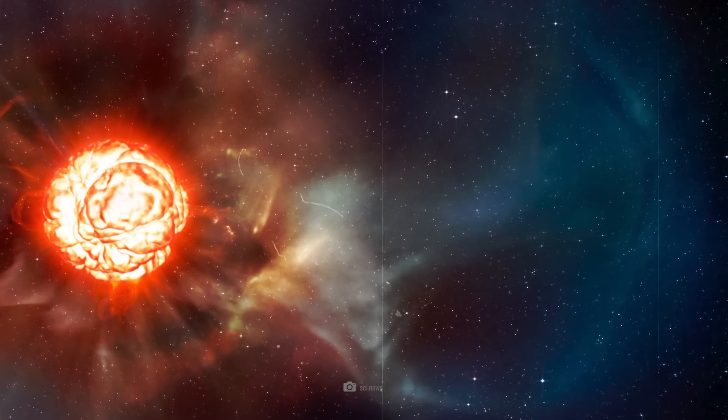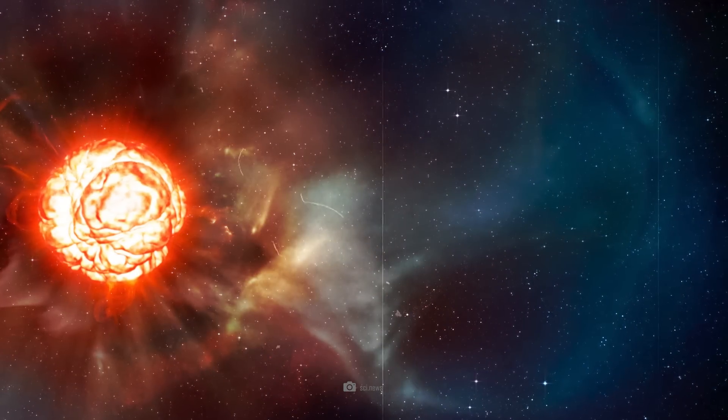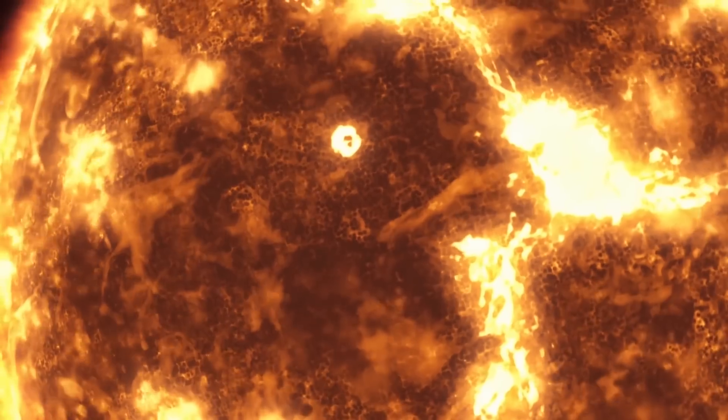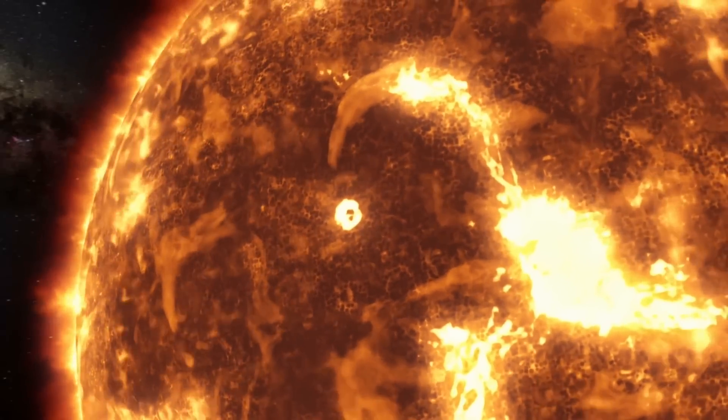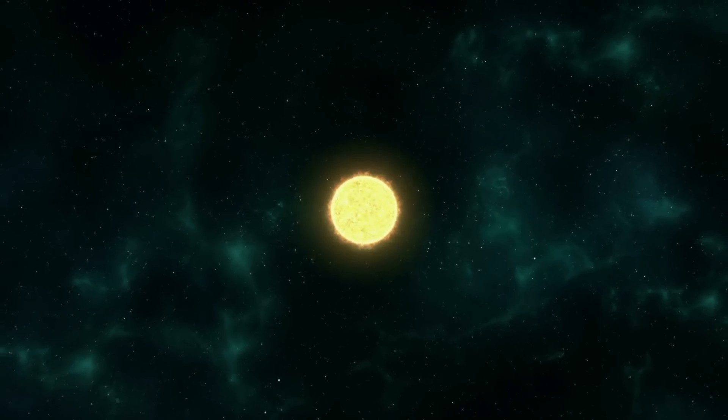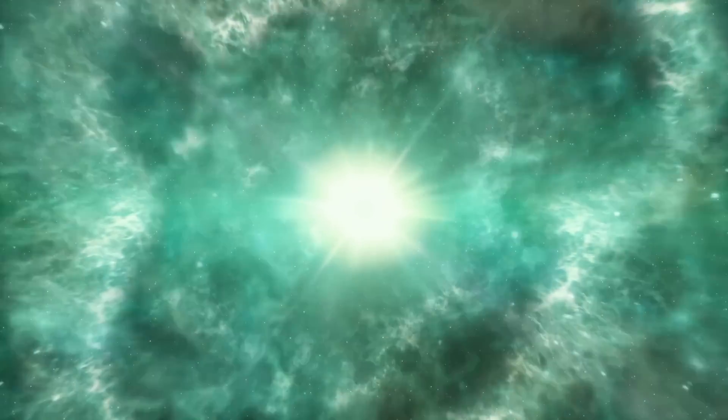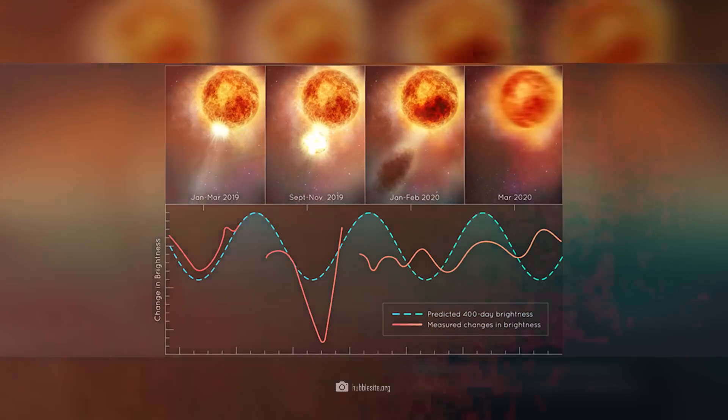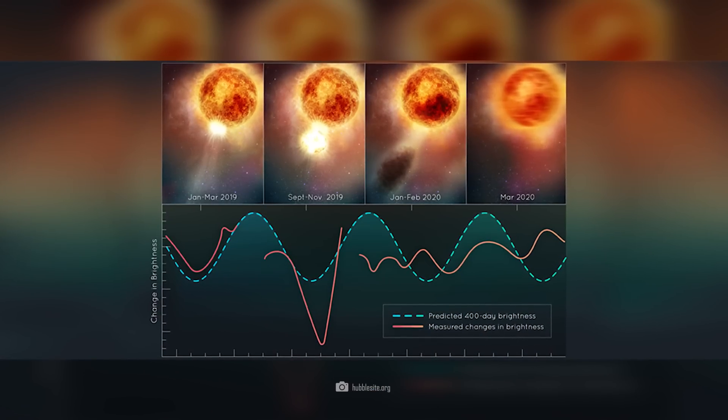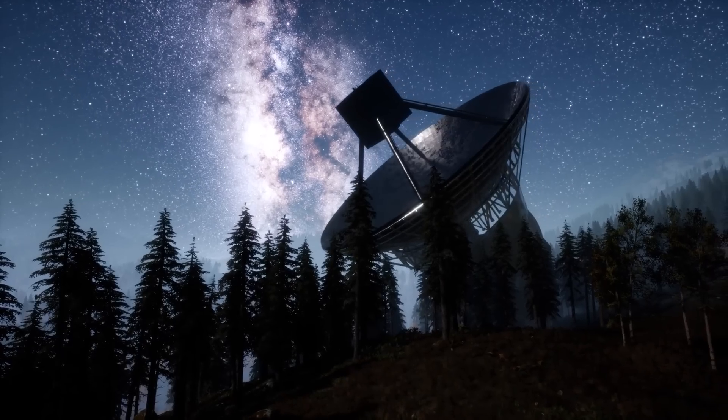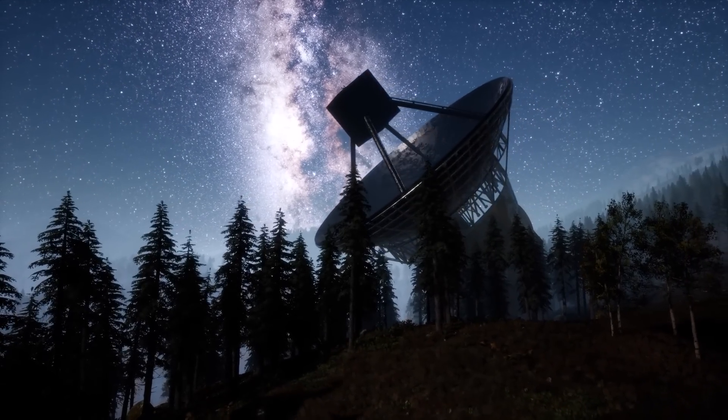Betelgeuse is also definitely in a late stage of its development. Scientists suspect that the star is currently undergoing the carbon-burning phase, which typically lasts about 1,000 years. When this phase ends, Betelgeuse could explode within decades rather than millennia, as originally thought. The renewed dimming of Betelgeuse in 2024 and the continuous fluctuations in brightness could be the first signs that the star is approaching its end.